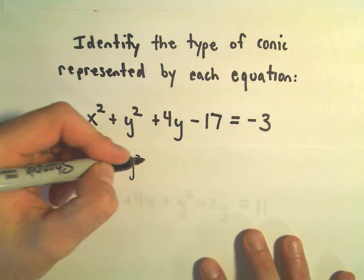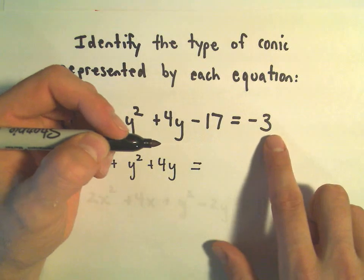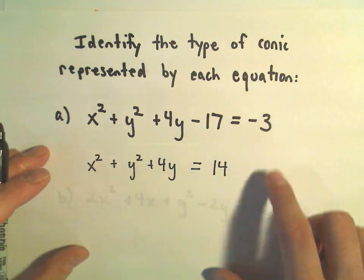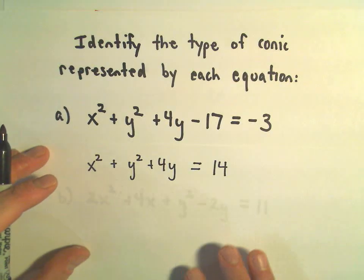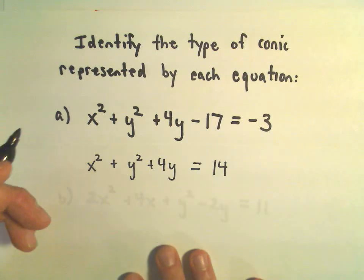So we have x squared plus y squared plus 4y. I'm going to add 17 to both sides. So negative 3 plus 17 would give me positive 14, and at this point you don't really have to do it. I can almost already look at this and say that it's going to be a circle.